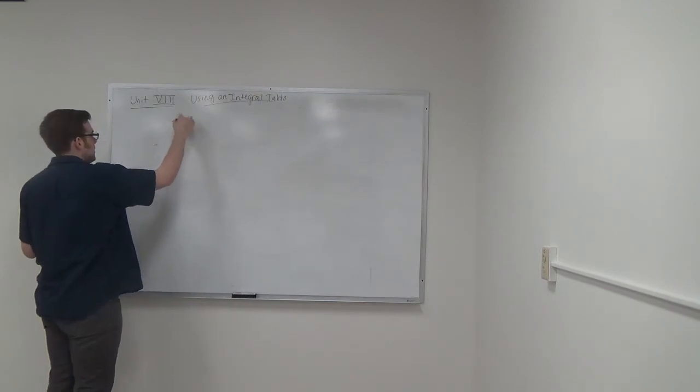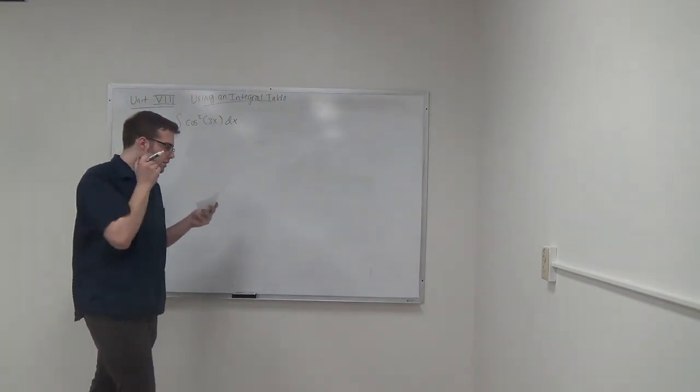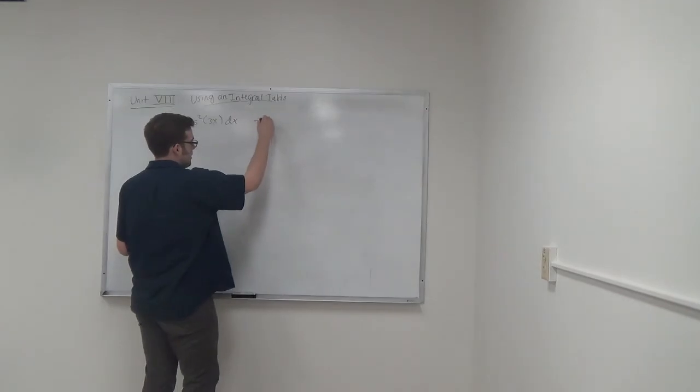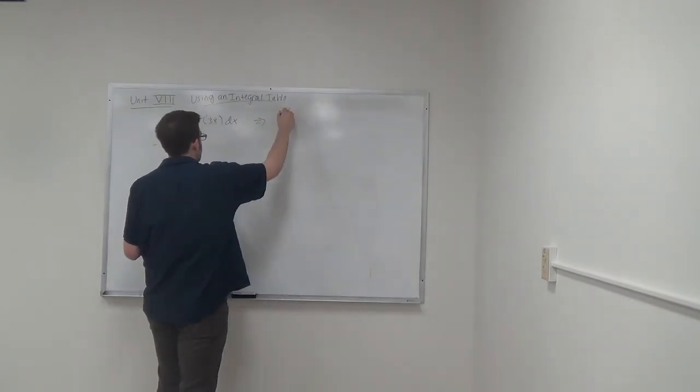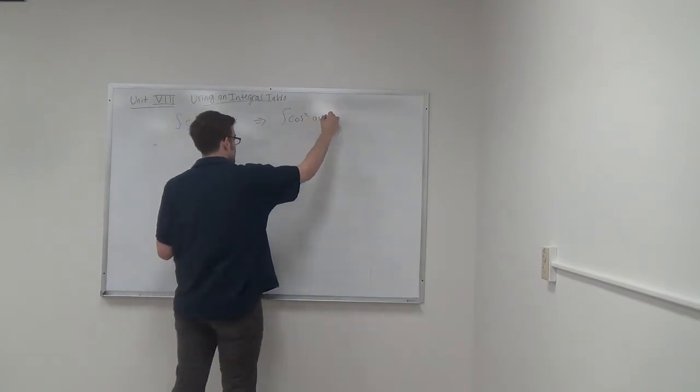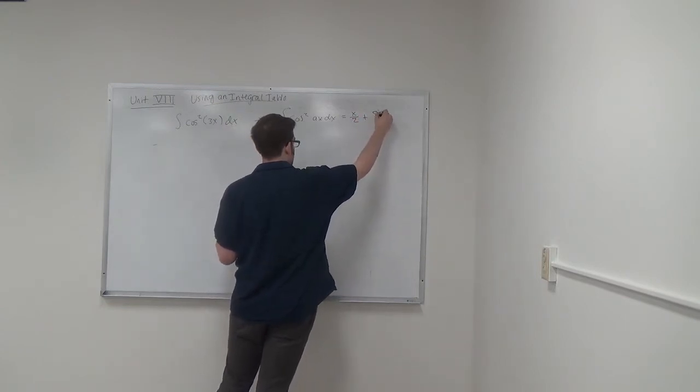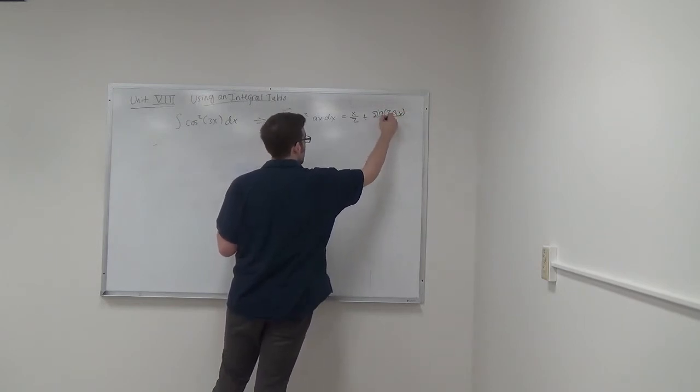So our next example is the integral of cosine squared 3x dx using the integration table. The integral of cosine squared of ax dx is equal to x over 2 plus sine of 2ax over 4a plus c.